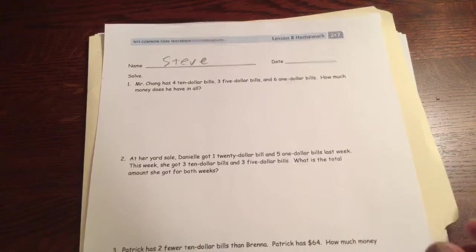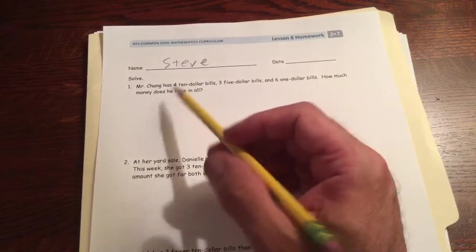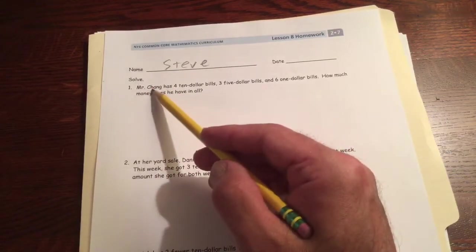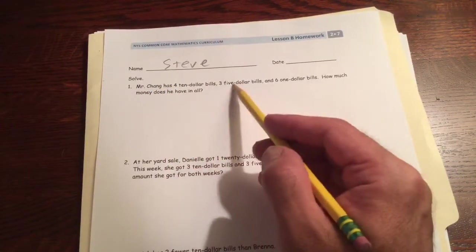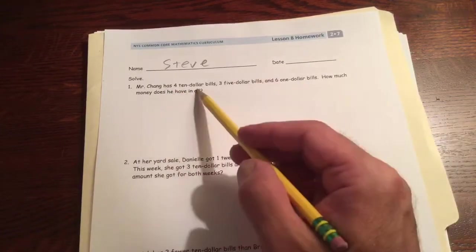These are all word problems involving the total value of a group of bills. This first one says, Mr. Chang has four $10 bills, three $5 bills, and six $1 bills. How much money does he have in all?